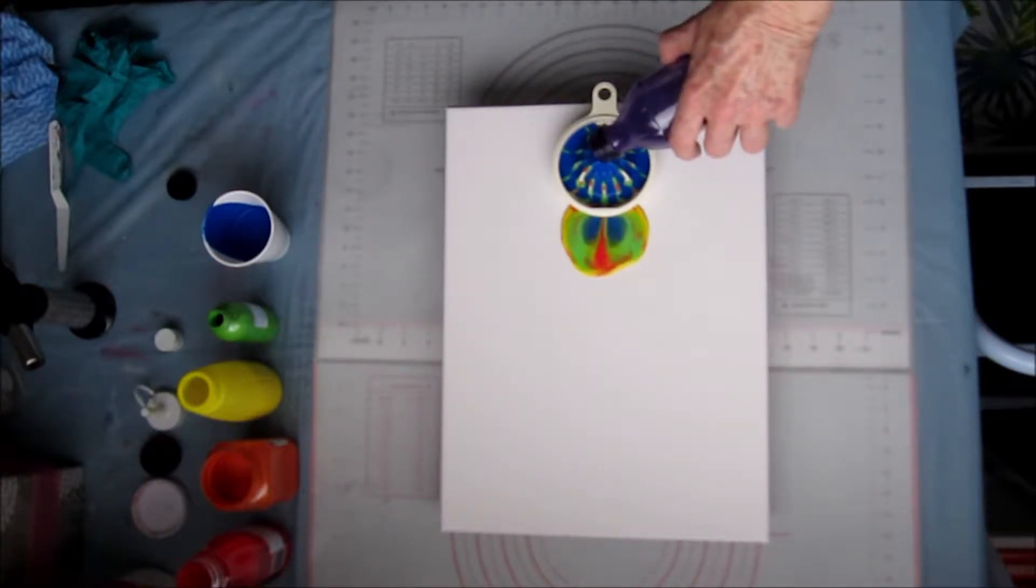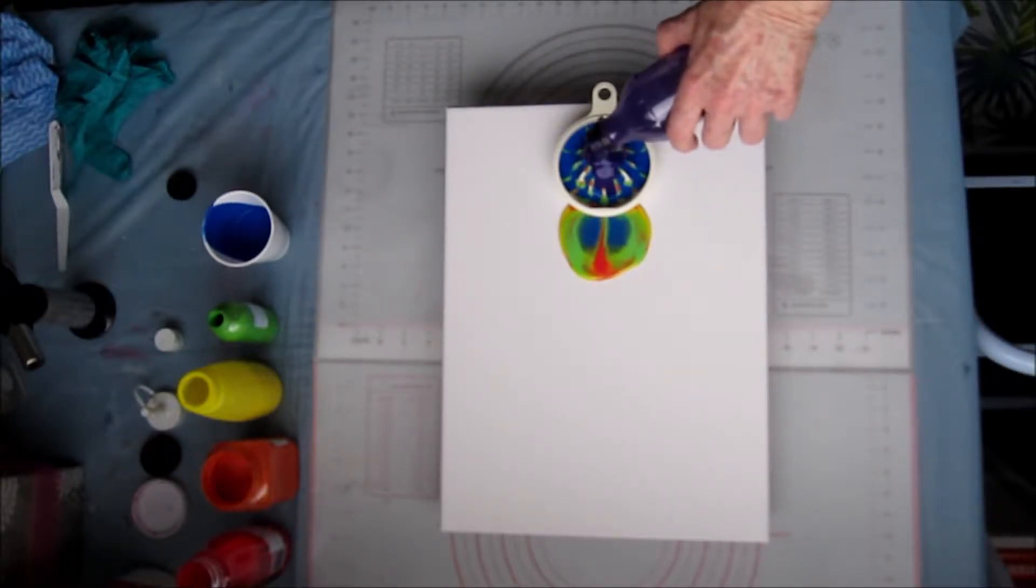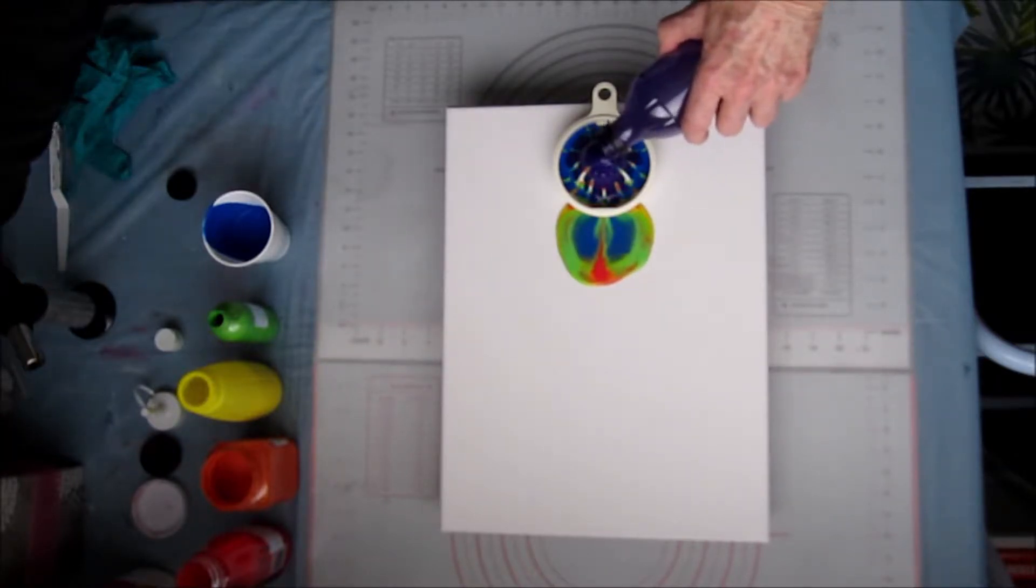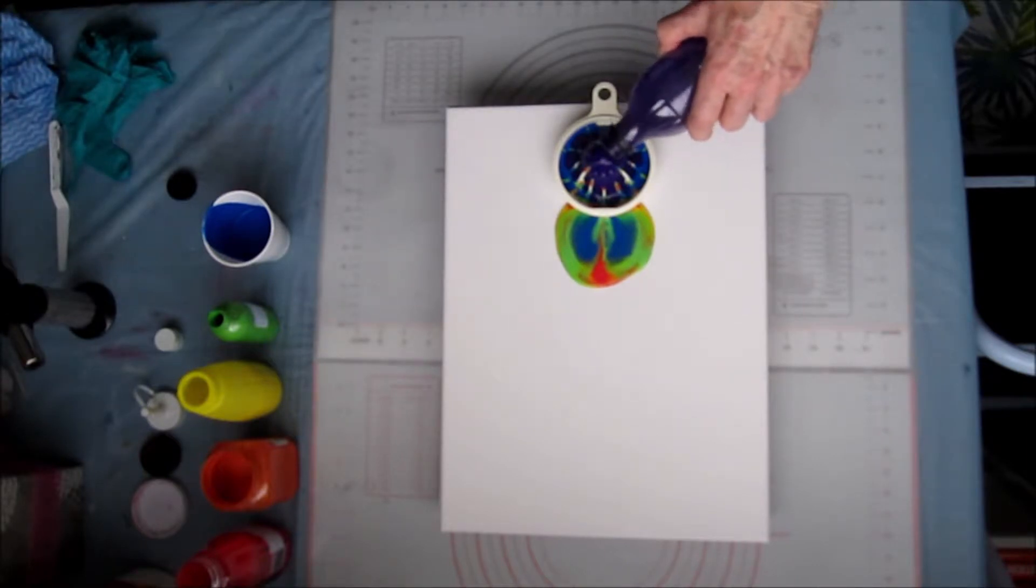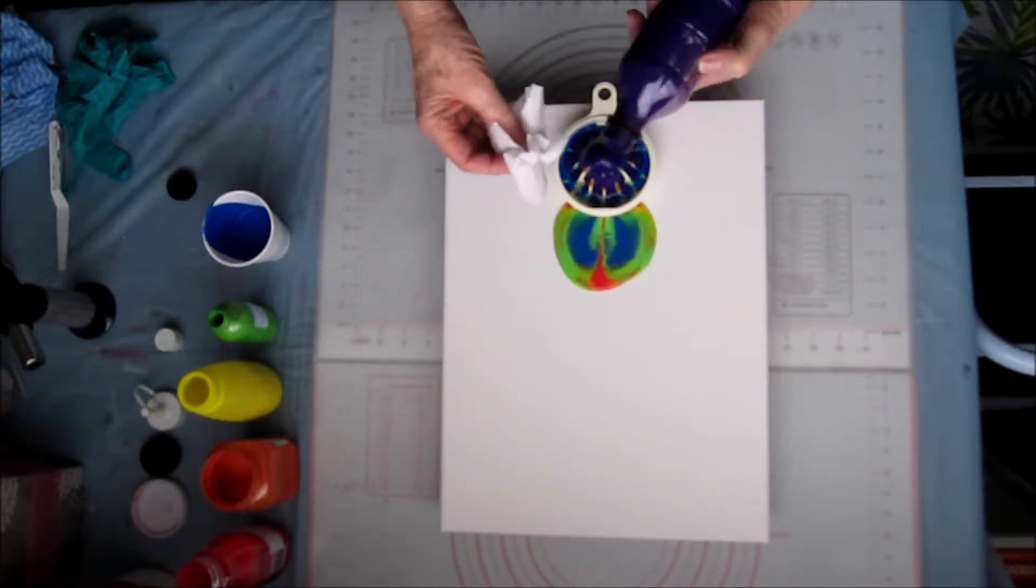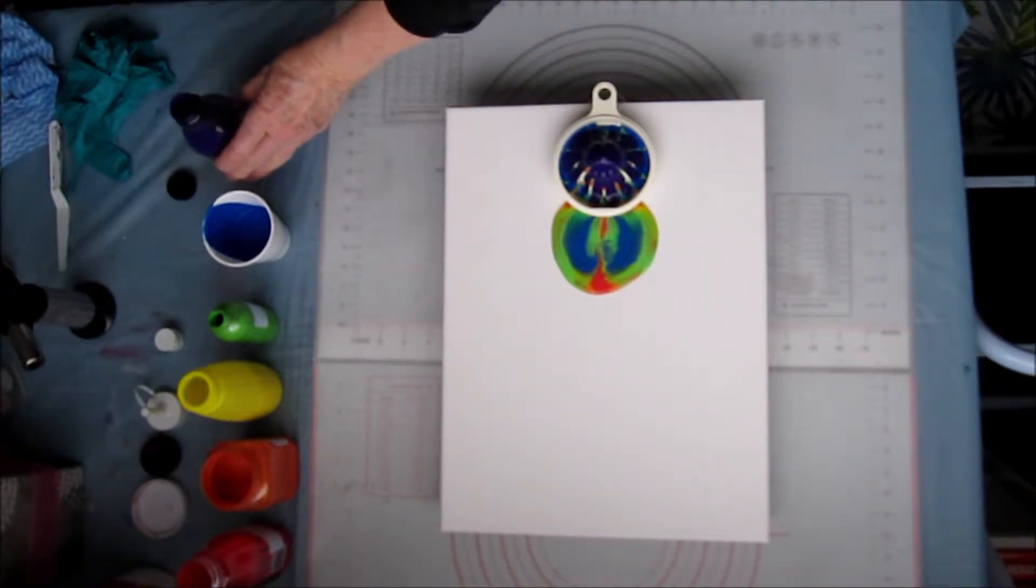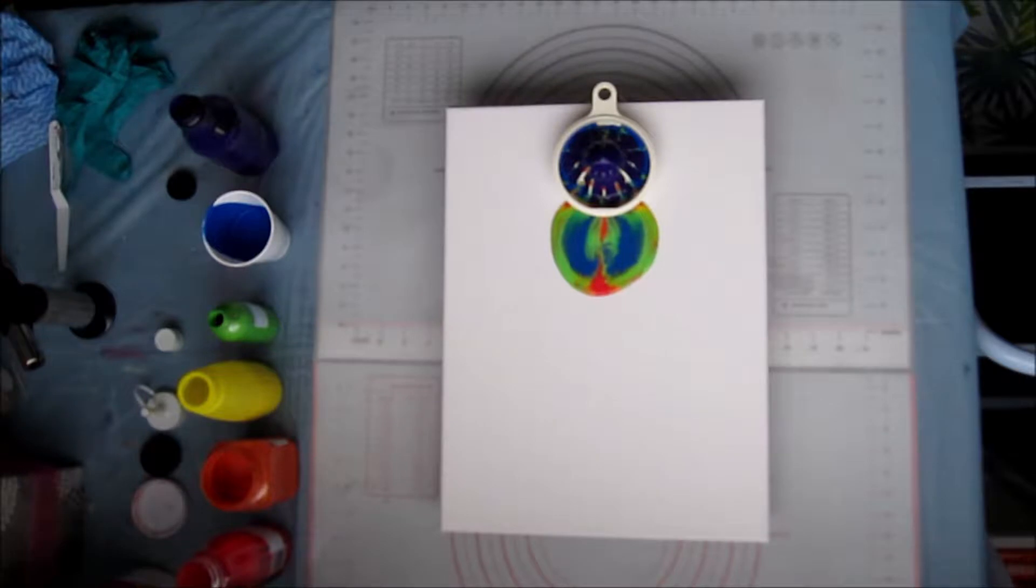The colours coming out are already muddying up. I had a feeling they would do that because of the small outlet that they have to come through but I wanted to try this so I'm finding out what it does. I haven't got a great deal of the violet. I'm not too worried as it's a very strong colour.